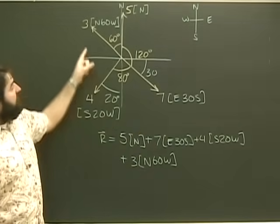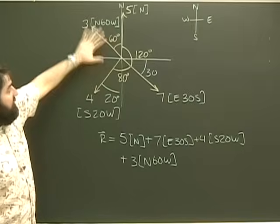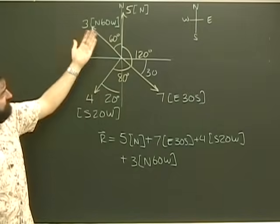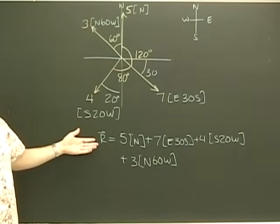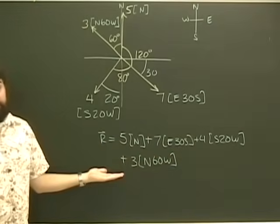So, in the last video, we took these four vectors and we added them up. In order to do that, we assigned bearings to them, and we came up with our vector equation.